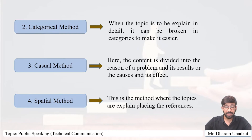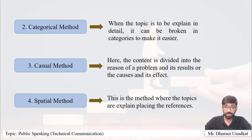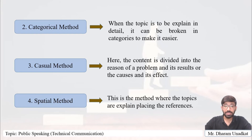Topics for the casual method include examples like global warming, corruption, effect of social media, and the increasing number of nuclear families, etc. These can all be arranged in this method. So this is the third method — the casual method.